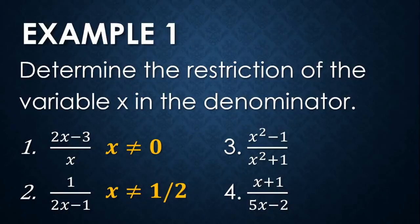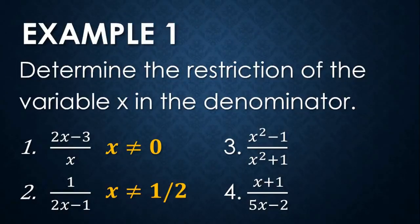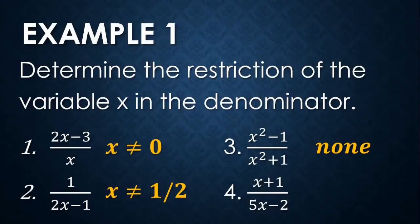For number three, we have (x² − 1) over (x² + 1). Whatever real number we assign to x, the denominator will not be equal to zero. Therefore, there is no restriction here. If you equate x² + 1 to zero, transposing one to the other side and taking the square root of negative one gives an imaginary number. Since we are working only with real numbers, there are no values of x that make the denominator zero. Restriction: none.